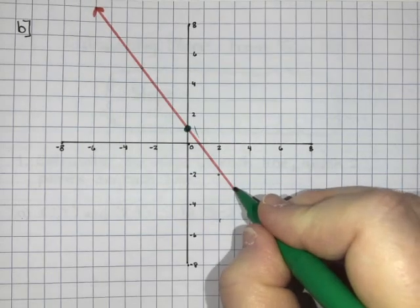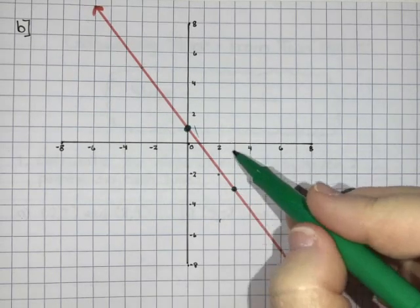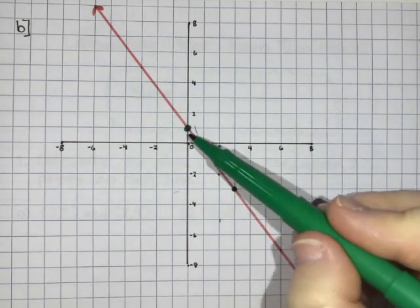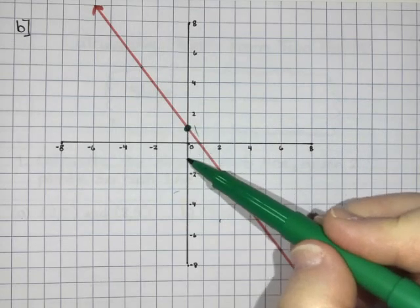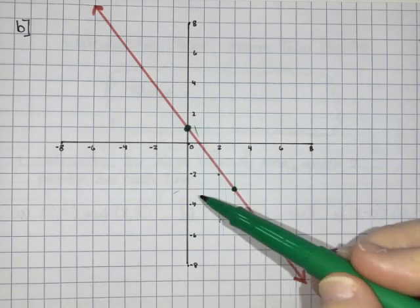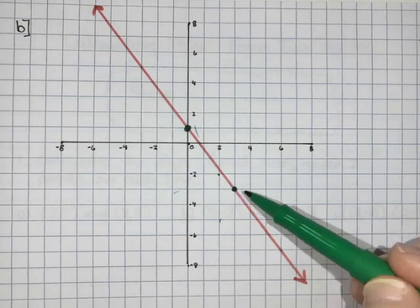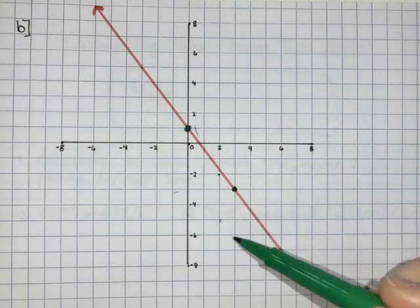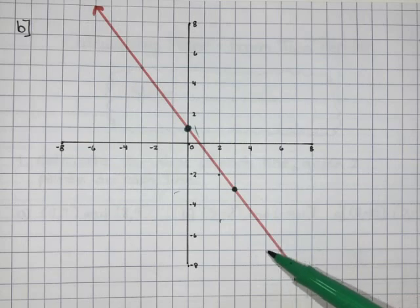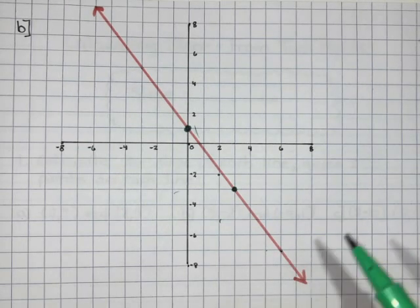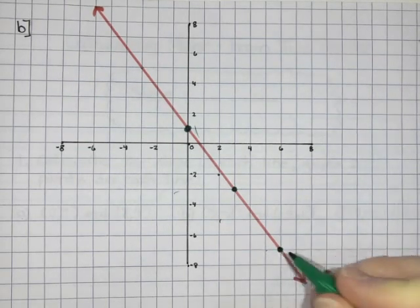I think there's a point here at 3 and negative 3. So that means I would have gone down 1, 2, 3, 4 and over 1, 2, 3. So I'm going to follow it again. We go down 1, 2, 3, 4, 1, 2, 3. I'm still on the line so I'm feeling really good about that.